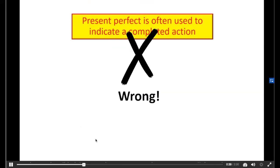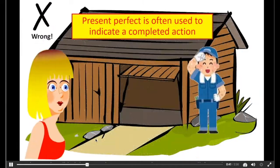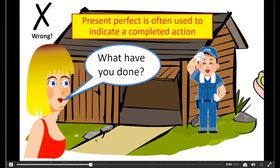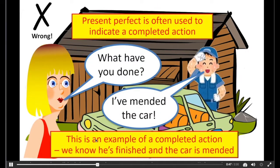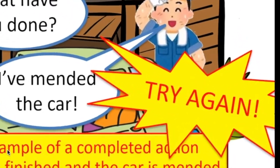What's wrong? Present Perfect is often used to indicate a completed action. What have you done? I've mended the car. This is an example of a completed action. We know he's finished, and the car is mended. Try again.